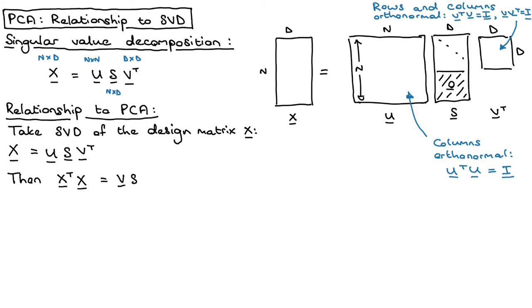So I get V S transpose U transpose multiplied by U S V transpose. And then because U is orthonormal, that means that this inner bit here, that's just the identity matrix. So I can write this out as V S transpose S V transpose.